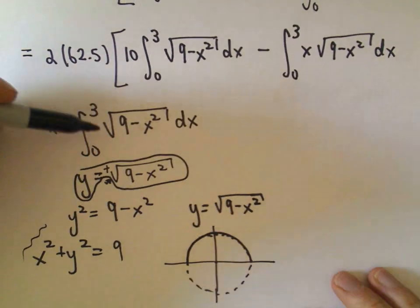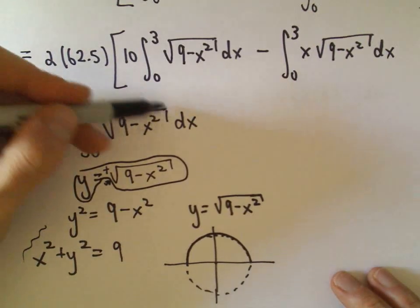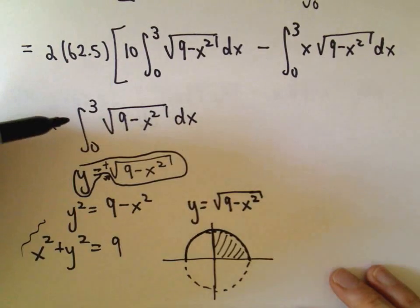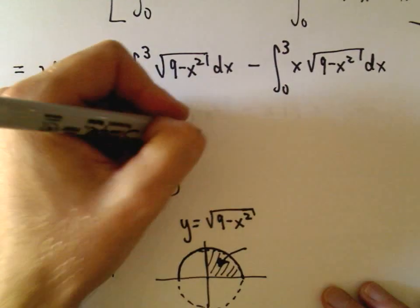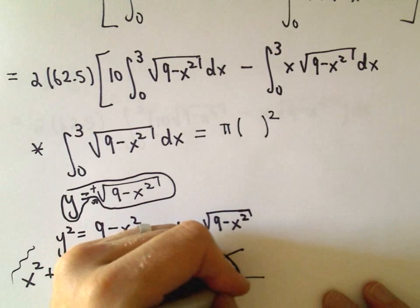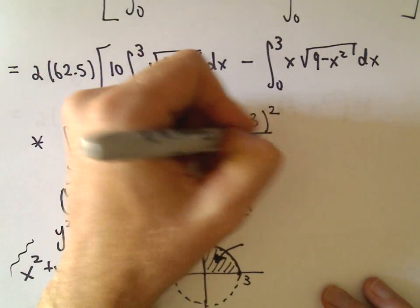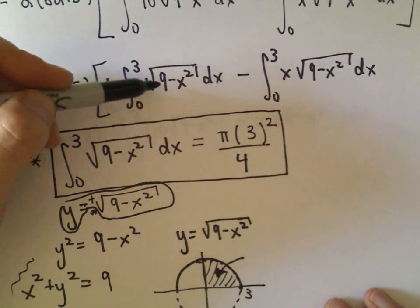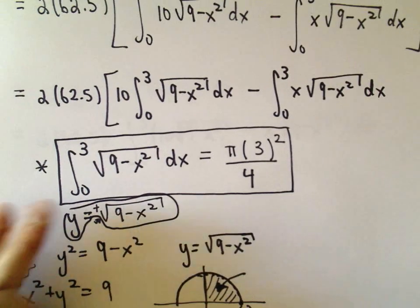We can interpret this definite integral in terms of areas: we're finding the area under the curve square root of 9 minus x squared from x equals 0 to x equals 3, which corresponds to a quarter segment of the circle. The total area of the circle is π times the radius squared — radius 3 — but we're only getting one quarter of it, so we divide by 4. It turns out the integral from 0 to 3 of the square root of 9 minus x squared equals π times 9 over 4, or 9π/4.